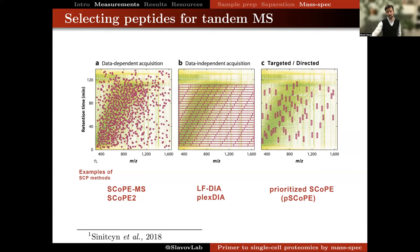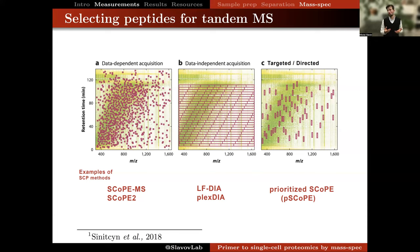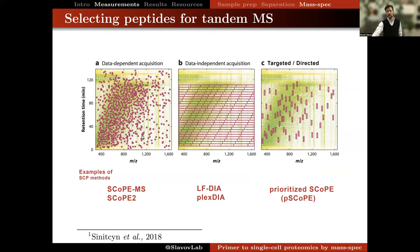The obvious difference in data acquisition methods is that when using data-independent acquisition or wide isolation windows, we collect data for all detectable precursors and fragments, potentially allowing identification of more detectable peptides. However, 'potentially' is important to emphasize, because merely collecting information for precursors and fragments is insufficient for reliable sequence identification. Somewhat related is the recent introduction of data-dependent acquisition with wide windows, though it does not sample precursors and fragments as systematically as DIA.